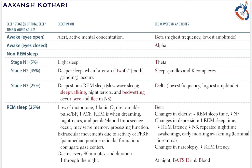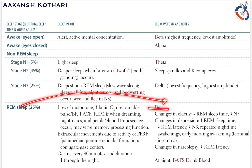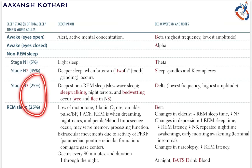The EEG waveform seen in REM sleep is similar to awake waves — beta waves, which are high frequency and low amplitude. As a person grows older, they experience a decrease in both REM sleep and N3 sleep — these two phases decrease with age.